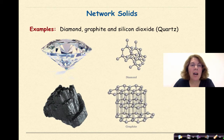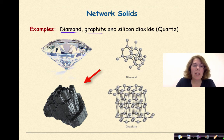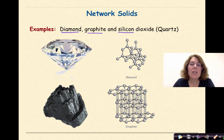Other examples of network solids are diamonds, graphite, we also call that pencil lead, we can see some graphite right here, and like I stated before, silicon dioxide which is known as quartz.